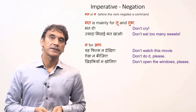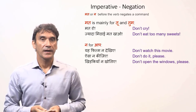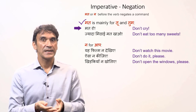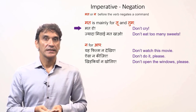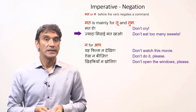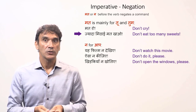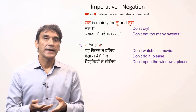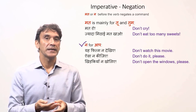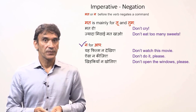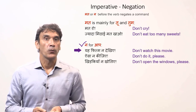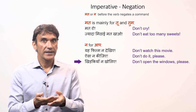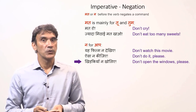In imperative, negation is expressed with the particles 'mat' and 'na.' 'Mat' is mainly used for 'tu' and 'tum.' For example, 'mat ro' — don't cry (subject 'tu'); 'zyada mithai mat khao' — do not eat too many sweets (subject 'tum'). The particle 'na' is used to negate imperative sentences with 'aap': 'yeh film na dekhiye' — don't watch this movie; 'aisa na kijiye' — don't do it please; 'khidkiyaan na kholiye' — don't open the windows please.